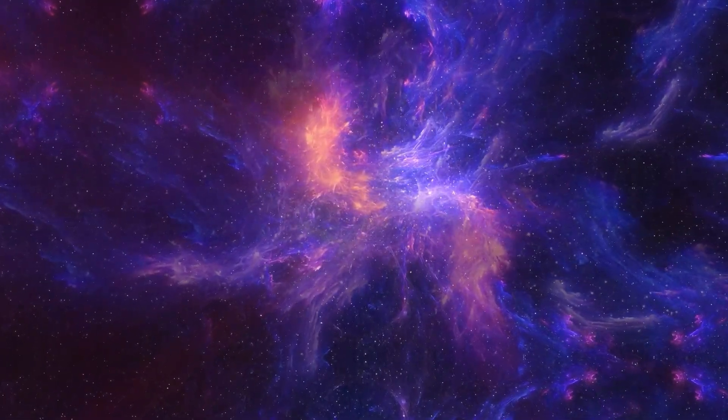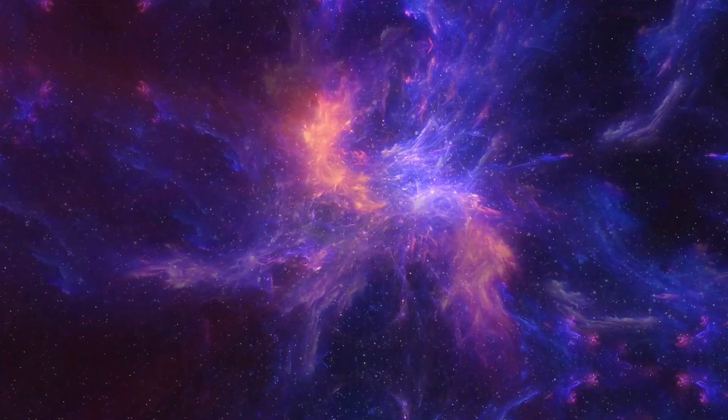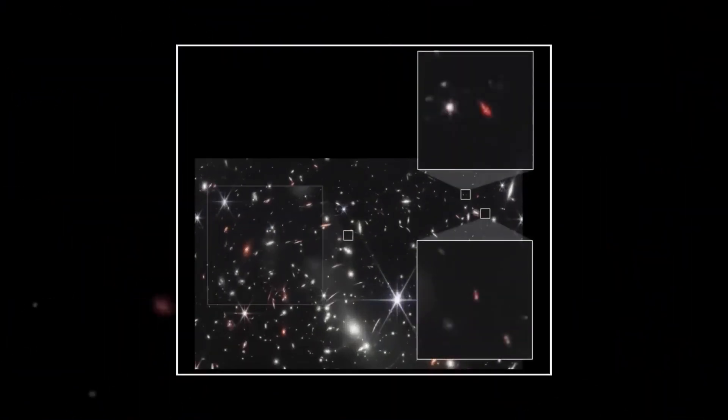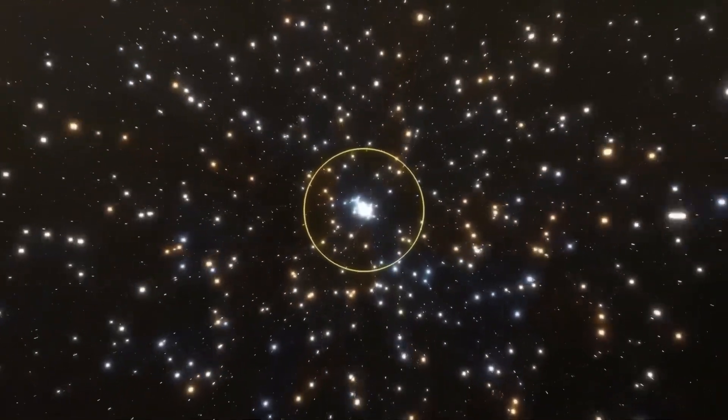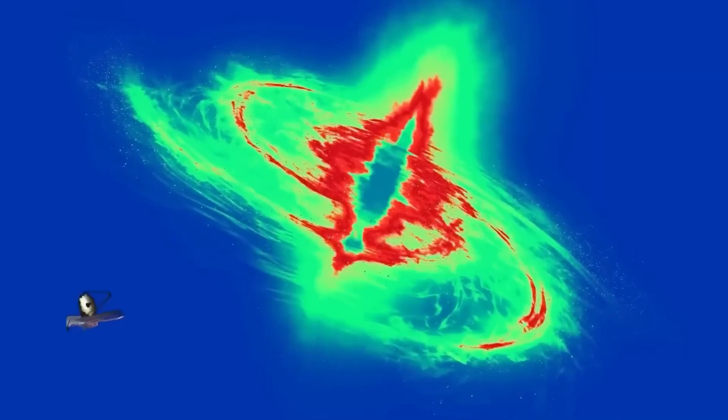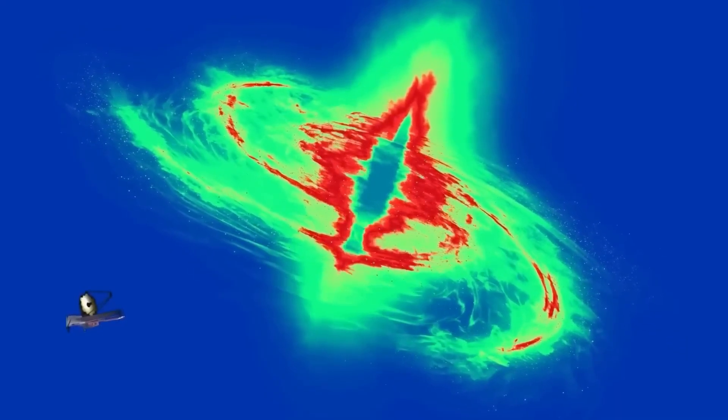To see nitrogen at these levels meant that supernova explosions responsible for seeding space with heavy elements had already been happening for hundreds of millions of years. That pushes the timeline for stellar birth and death cycles into an era we once believed was nothing but chaos and gas clouds.